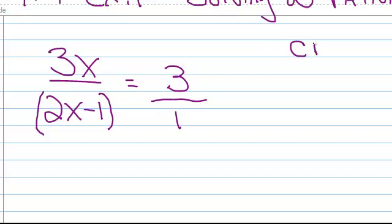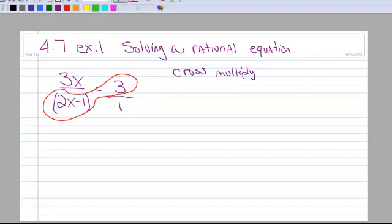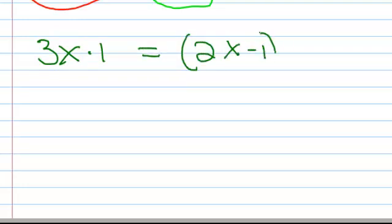And now I'm ready to do something called cross-multiply. When I cross-multiply, what happens is this bottom term gets multiplied by the top term on the other side. And the top term on the left gets multiplied by the bottom term on the right. So this is what it looks like when you multiply it out. We have 3x times 1. That's equal to 2x minus 1. Notice I'm still keeping it in parentheses. Times 3.